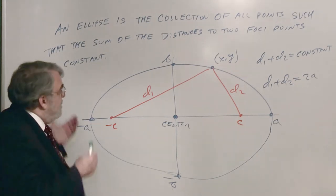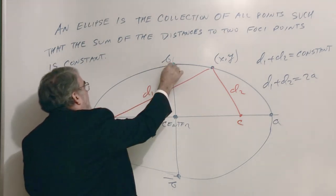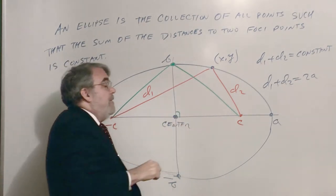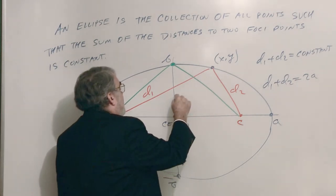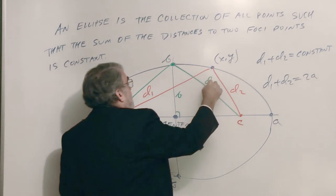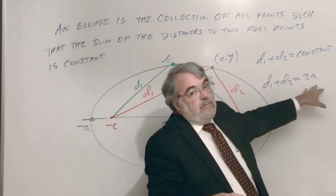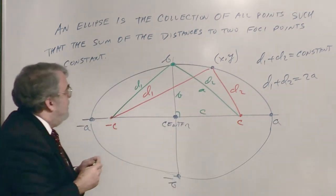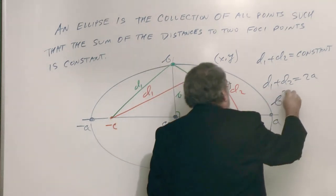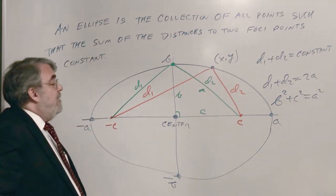What is the relationship between A, B, and C? If I consider the top point on the ellipse, there's a right triangle with height B, base C, and hypotenuse D2. At that top point, D1 equals D2, and since D1 plus D2 equals 2a, they're both equal to A. So by the Pythagorean theorem: B squared plus C squared equals A squared.